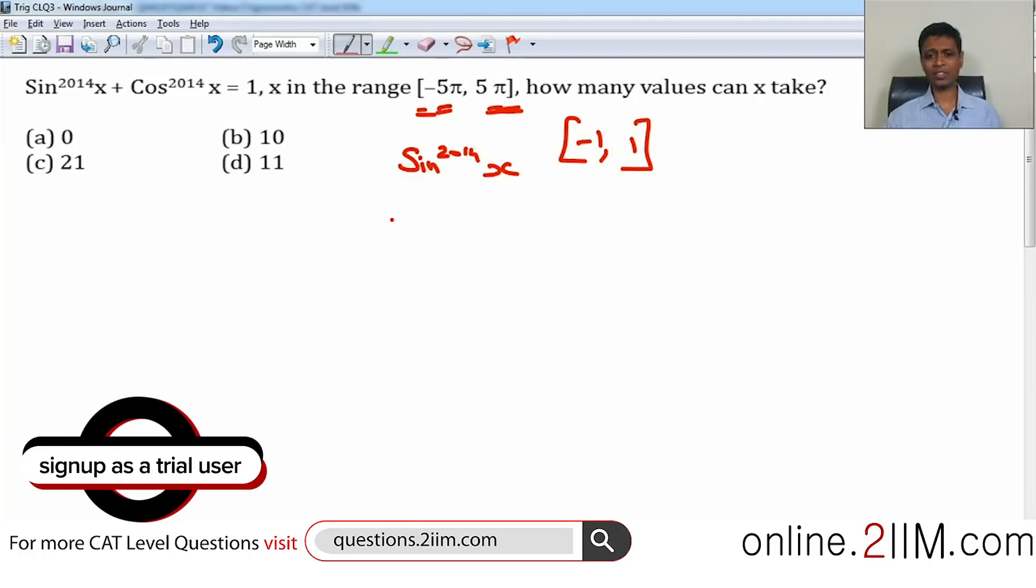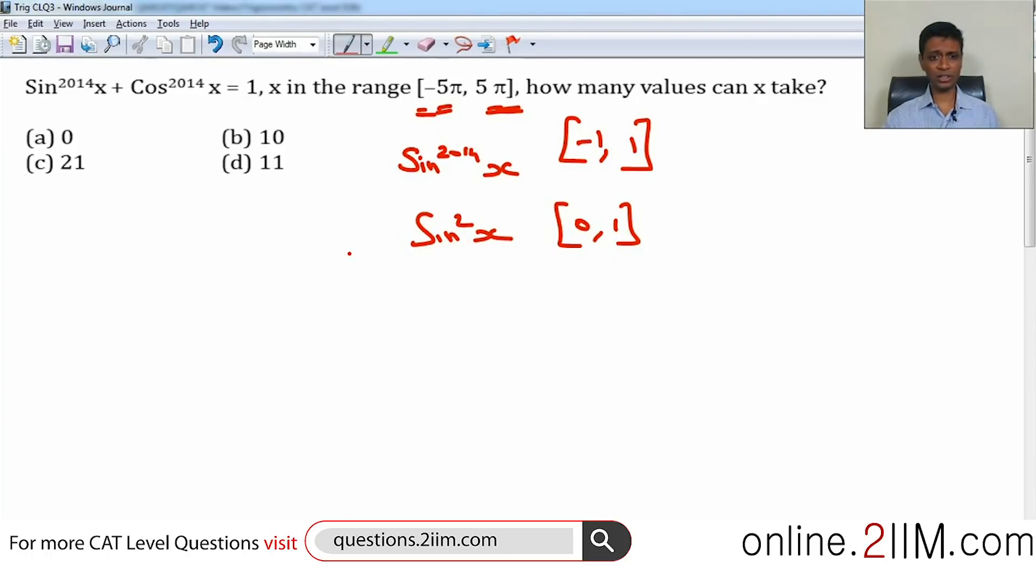Now where will sin²(x) lie? Sin²(x) is always positive, so sin²(x) will lie between 0 and 1. I am not thinking about sin^2014(x), I am thinking only about sin²(x). Now sin²(x) magnitudinally will be smaller than sin(x). We are talking about a number from minus 1 to plus 1, so the magnitude when you square the number will shrink.